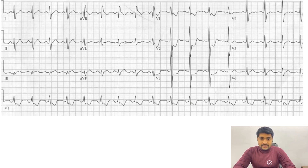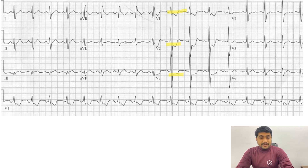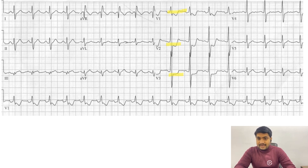So if we look at this example again, we have ST segment depression in V1, V2, V3, with upright T wave and prominent R wave. Normally when we go from V1 to V4, the R wave is very negligible compared to the S wave. But in the case of posterior wall MI, we see a prominent R wave sometimes even bigger than the S wave, then shelf-like ST segment depression and upright T wave. This is our posterior wall MI.